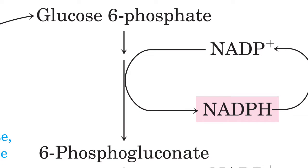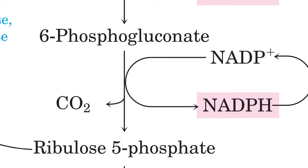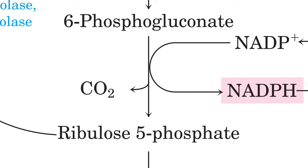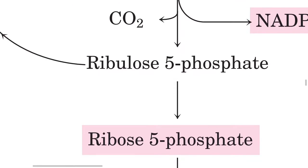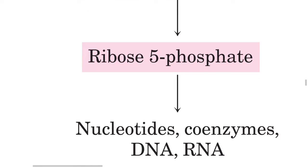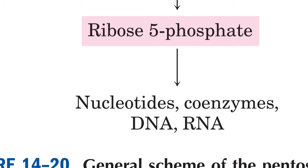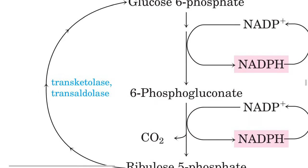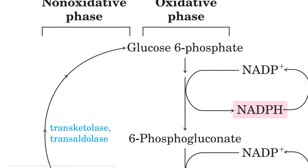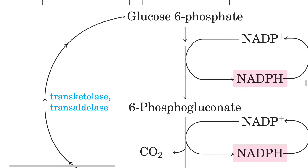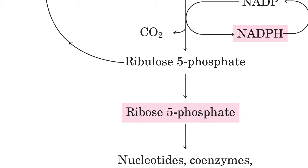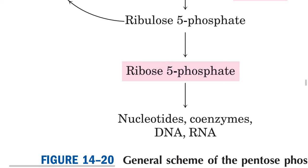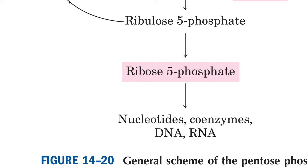In the oxidative phase, 6-phosphogluconate undergoes both decarboxylation and oxidation, releasing CO2 and again converting NADP+ to NADPH, ultimately forming ribulose-5-phosphate. From ribulose-5-phosphate, ribose-5-phosphate is formed, which is used for the synthesis of nucleotides, coenzymes, and nucleic acids like DNA and RNA.